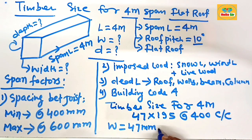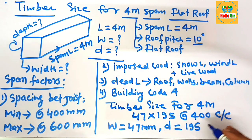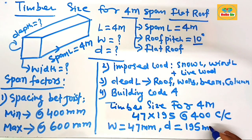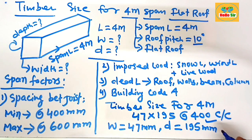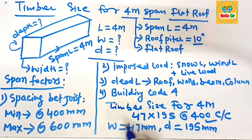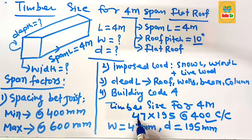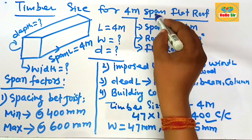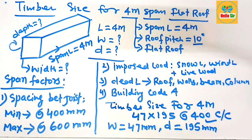The width of the joist is 47 mm, the depth section of the joist is 195 mm, and the center spacing is about 400 mm. This is the timber size required for a four meter span flat roof.